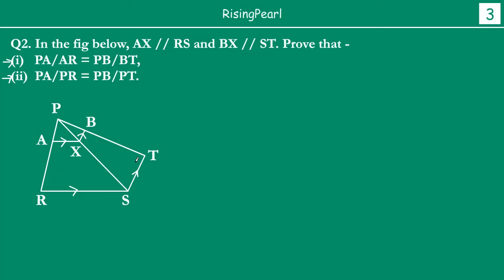It is important to understand that the ratio you are looking at is PA divided by PR equal to PB divided by the whole length PT. You are not looking at PA by AR. Whenever you have something like this — if I look at triangle PRS, AX is parallel to RS — so I can write the ratio as PA by AR equal to PX by XS. But in this case, I have a ratio PA, but then I have the whole length PR.